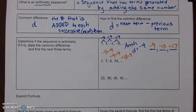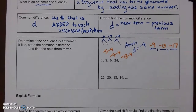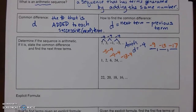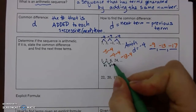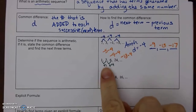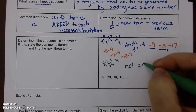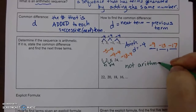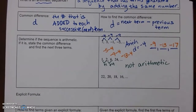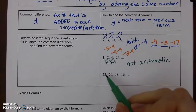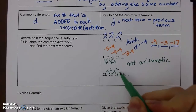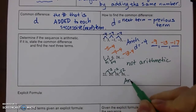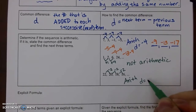The second sequence is 1, 2, 6, 24. Here I added 1, then added 4 — since I'm not adding the same number, this is not arithmetic. There may be a pattern, but it is not an arithmetic pattern. The third sequence: 20, 22... wait — subtract 2, subtract 2, subtract 2 — so it is arithmetic, with common difference -2.